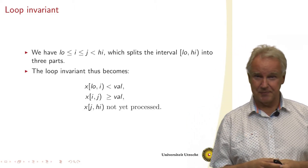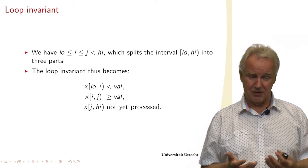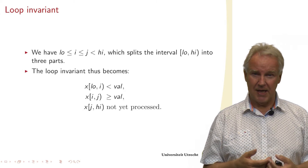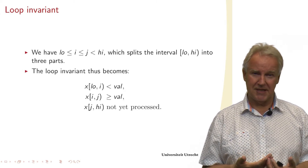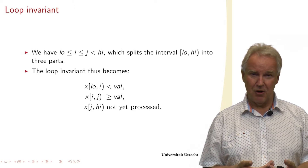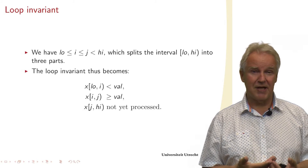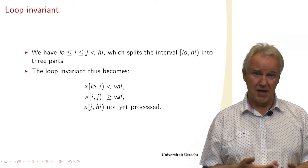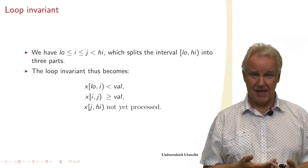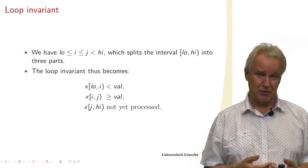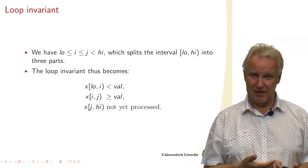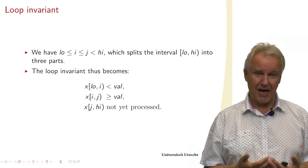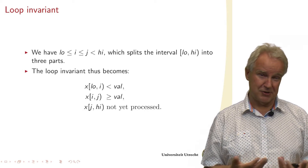The answer is: we have this interval between low and high, with indices i and j where i is less than or equal to j. The interval is split into three parts. Everything between low and i, excluding i, has values below val. Everything between i and j, excluding j, has values higher than or equal to val. Everything between j and high has not been processed yet. At the end of the algorithm, when j equals high minus one, we just have either the first or the second statement being true, and so we have split the whole array.